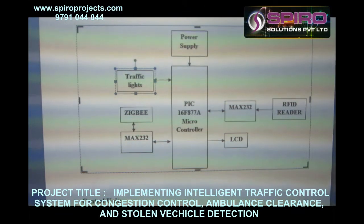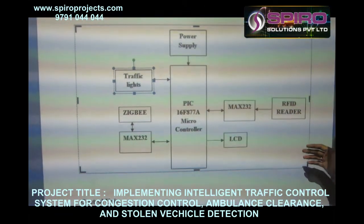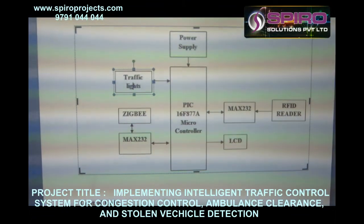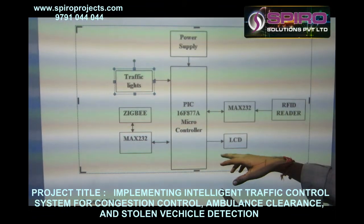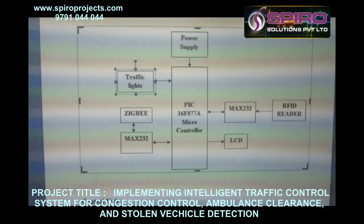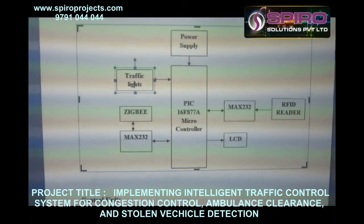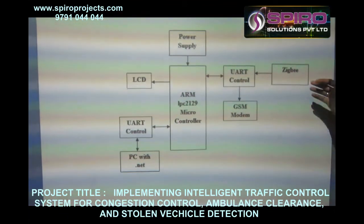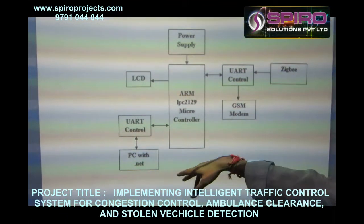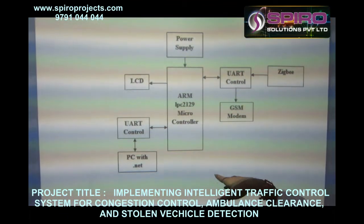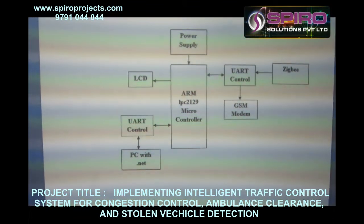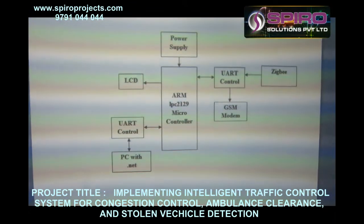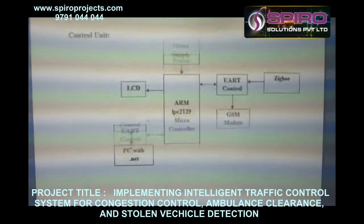If the vehicle is an ambulance, that is not a problem. If any consumer vehicle crosses during a red signal, the information will go through ZigBee to the control section. There is also a ZigBee receiver there. This receiver receives the signal and the registration number is displayed on the PC. At the same time, the GPS also sends information to the control system.